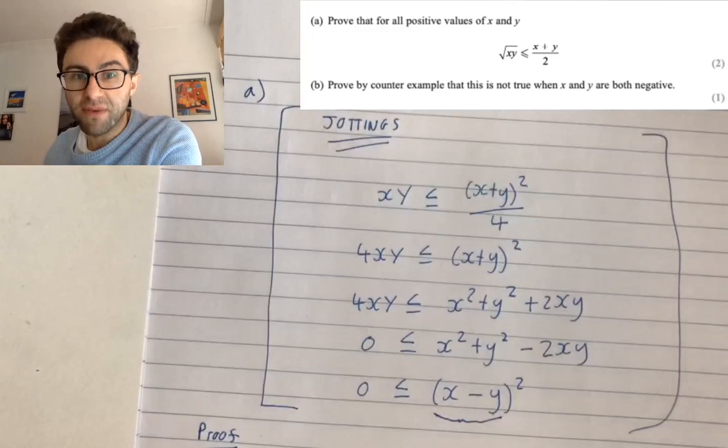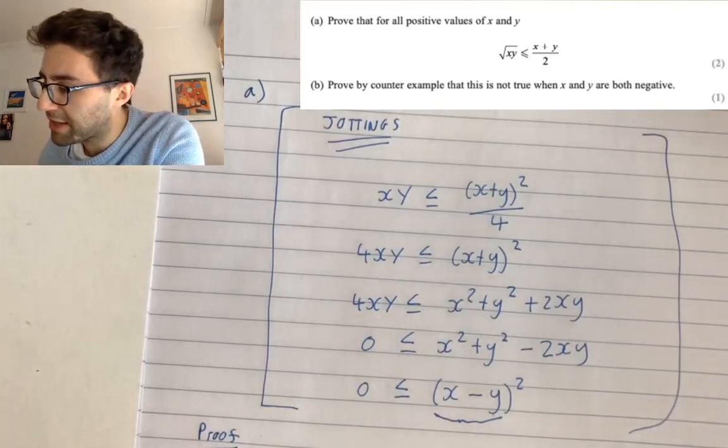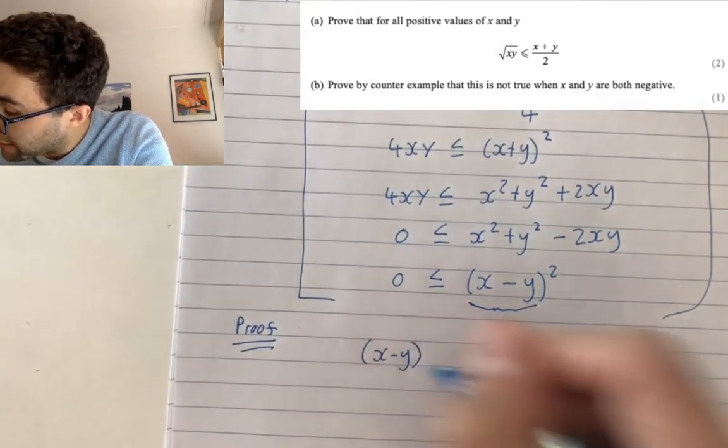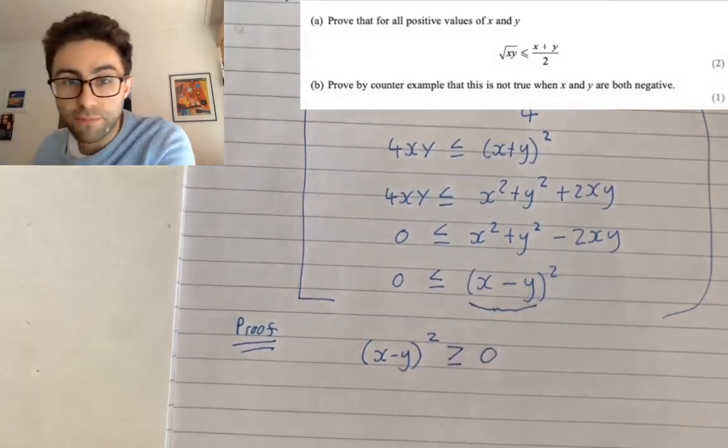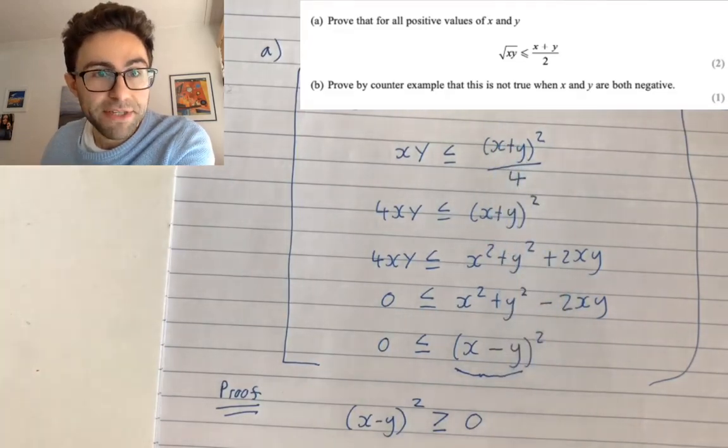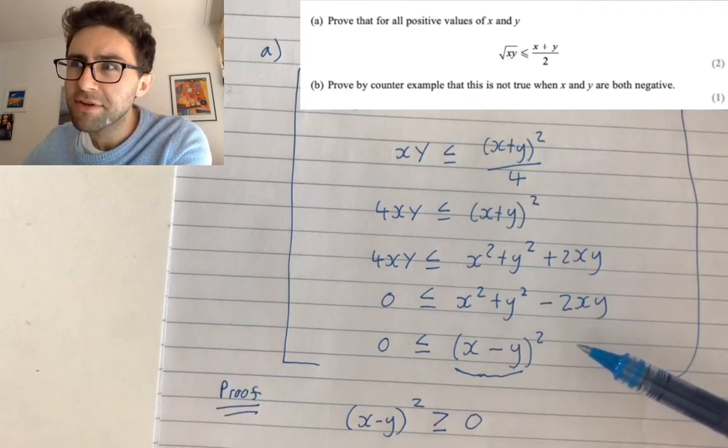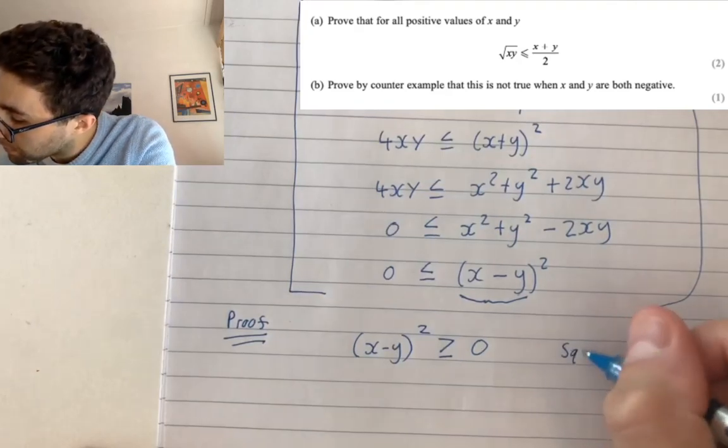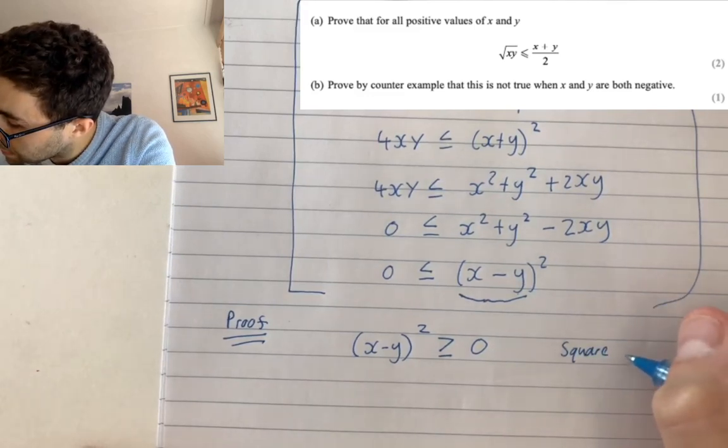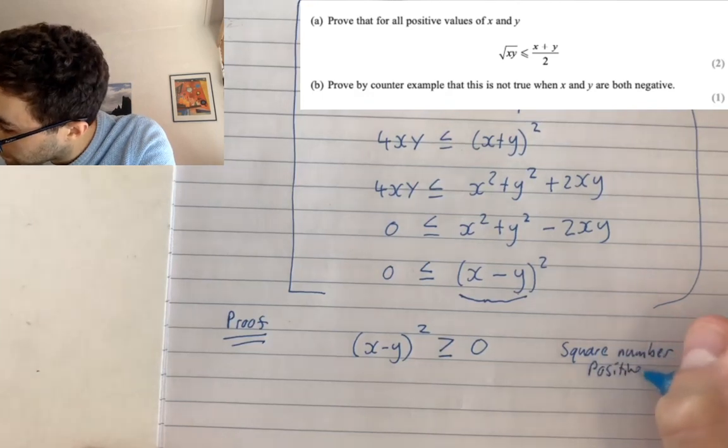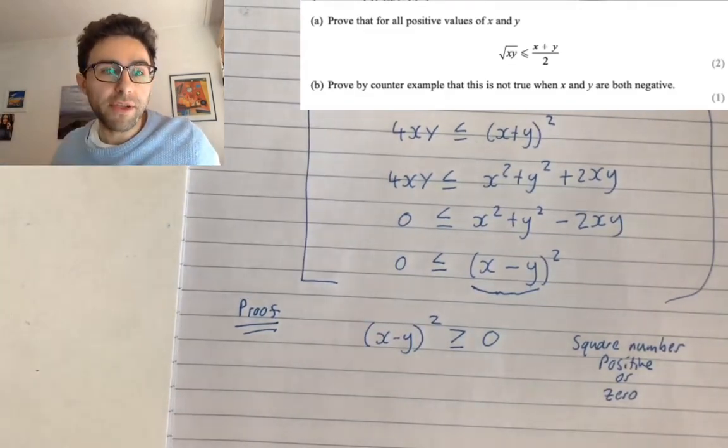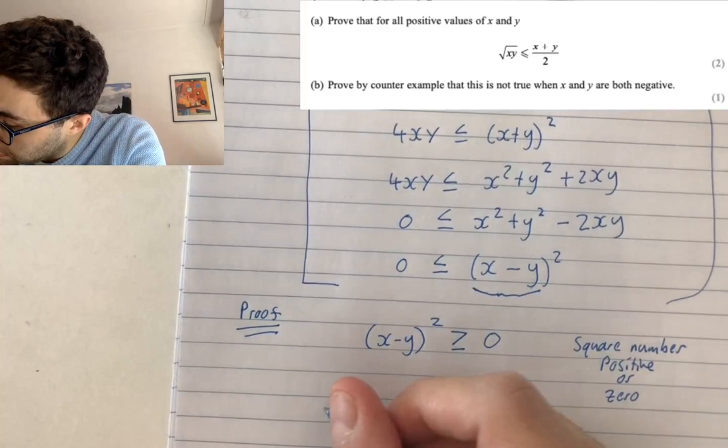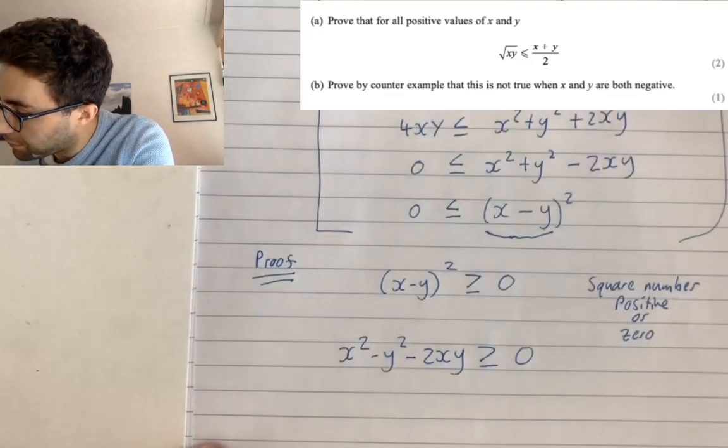And what do I fancy doing now? Take away the 4xy from both sides. Now you might just be looking at this thinking, what is this guy on? Is he woken up on the wrong side of bed? Maybe. But on the other hand, bear with me. This is my rough stuff. Jottings is what I like to call it. We've not actually done the proof yet.